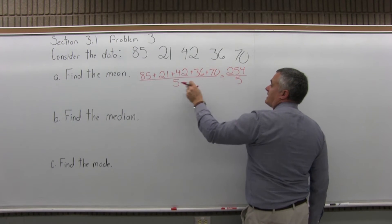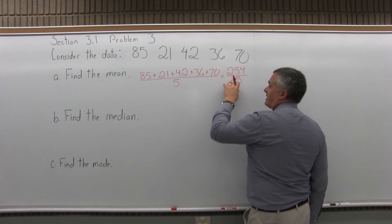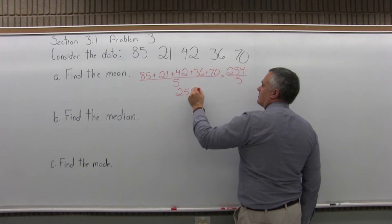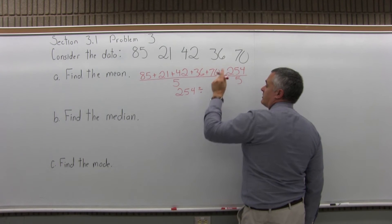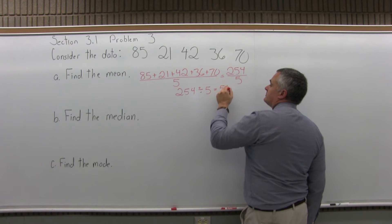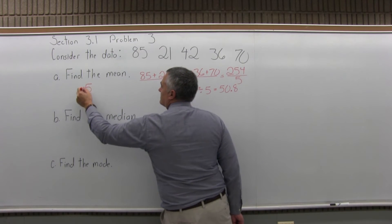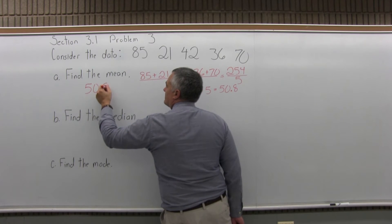And you want to divide that by 5 again, because there's 5 data values. That's not something that you might want to do in your head without a calculator. So with your calculator, the top 254 divided by the bottom 5, would equal 50.8. So that's the mean, 50.8.